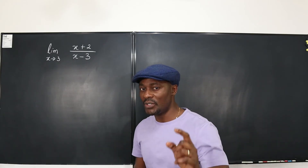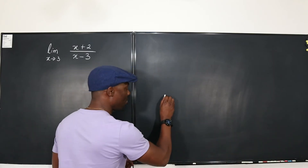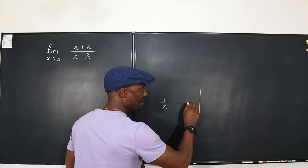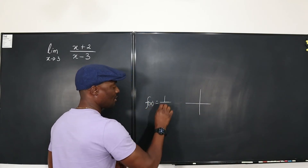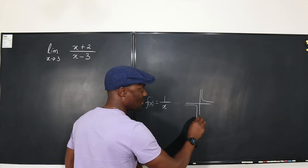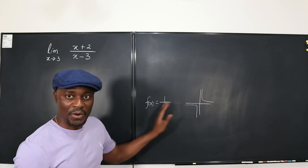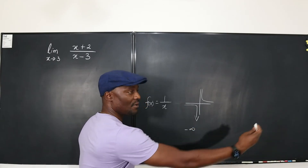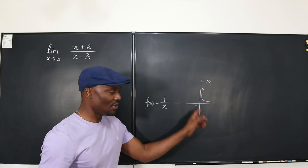Let me call your attention to something you probably should know by now. If you plot the graph of 1 over x, the graph of f(x) = 1/x looks like this on the right and on the left it looks like this. So at the point where x equals 0, from the left-hand side the graph is going to negative infinity, and from the right-hand side the graph is going to positive infinity. So there's no limit.